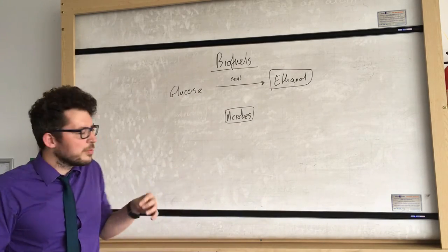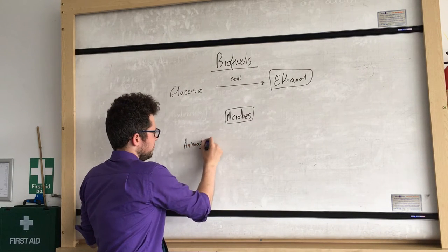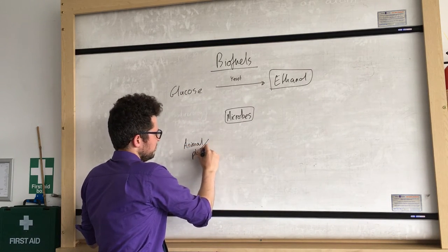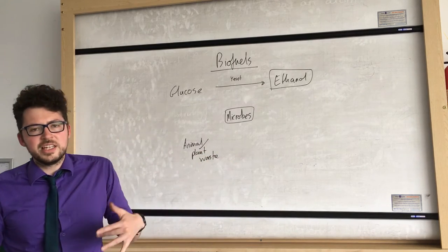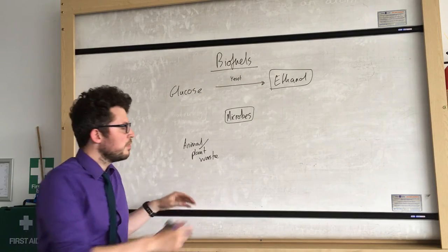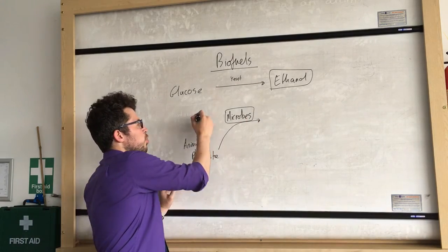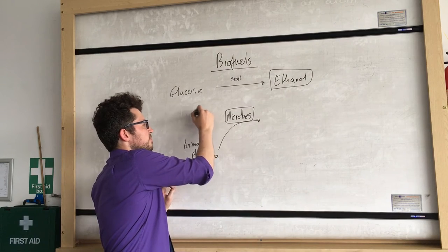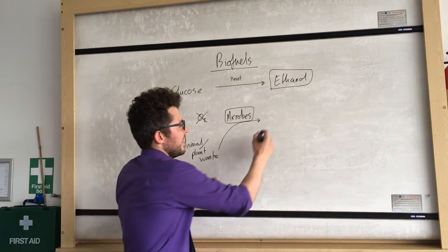What we use is we use animal and plant waste materials and then it's provided to microbes. But again it's in anaerobic conditions, so without oxygen. And what those microbes produce is they produce methane.